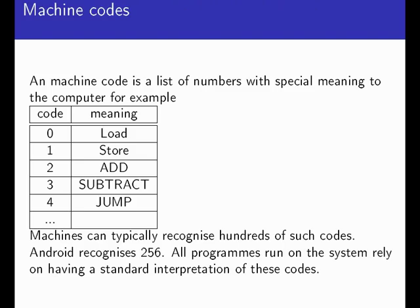How do we apply this ecosystem approach? We use permutation. A machine code is a list of numbers with special meanings to a computer — zero might mean load, one might mean store, etc. Machines typically recognize hundreds of these codes. Android recognizes 256. All programs that run on these systems rely on having a standard interpretation of the codes, since these codes give semantics to the programs running on them.